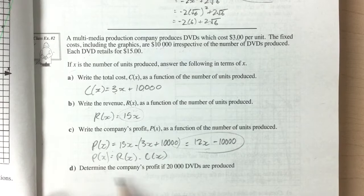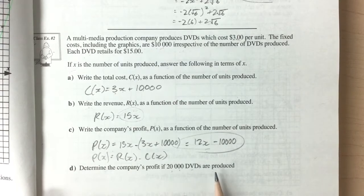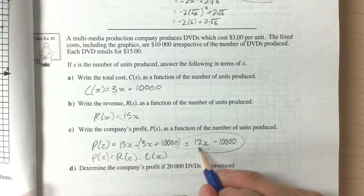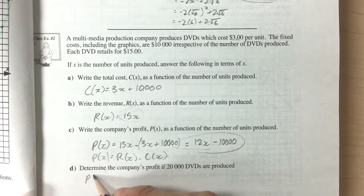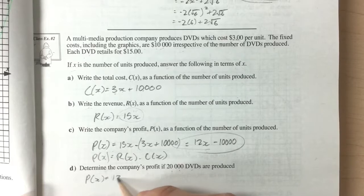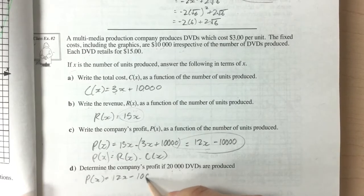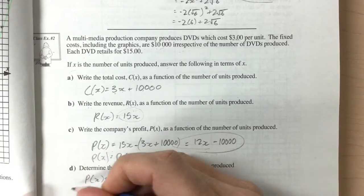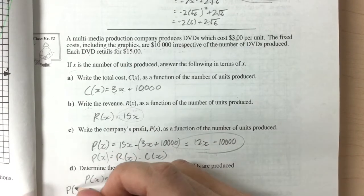Now if we want to determine the company's profit, if 20,000 DVDs are produced, this is our value of x here. So if I use this equation, we'll call that p of x is equal to 12x minus $10,000. All we need to do is substitute our value of x with 20,000.